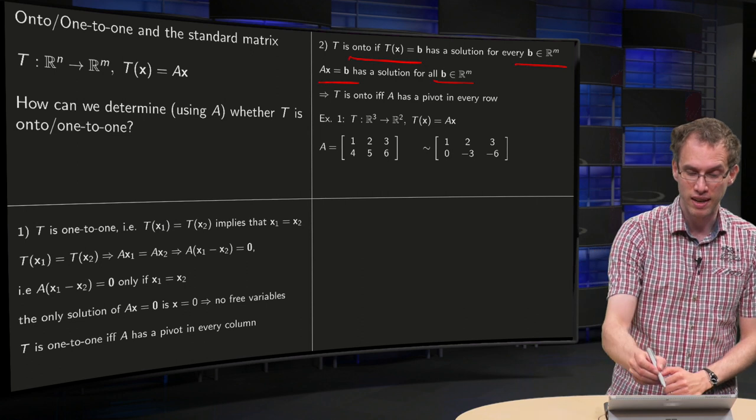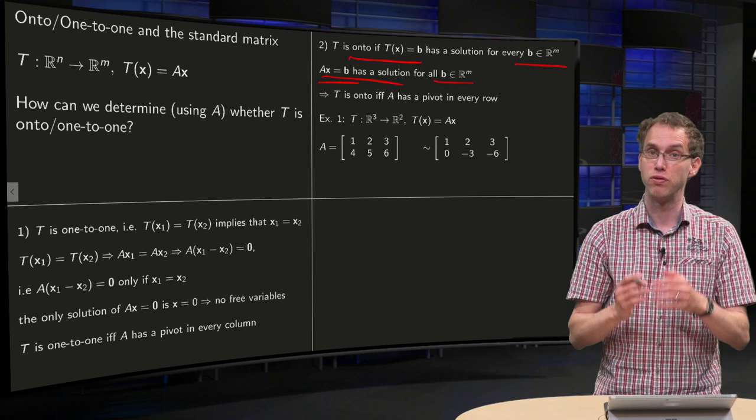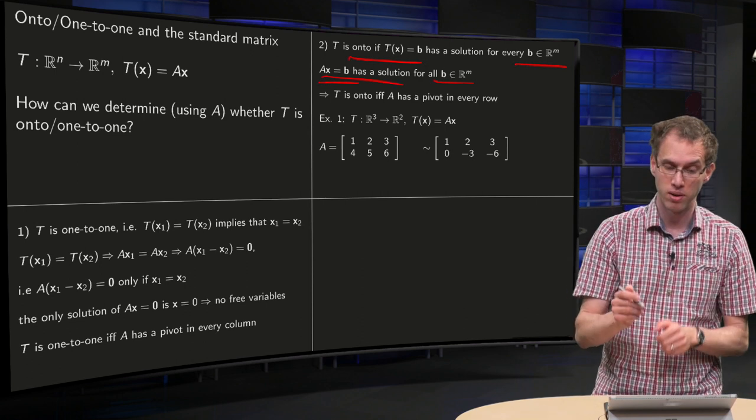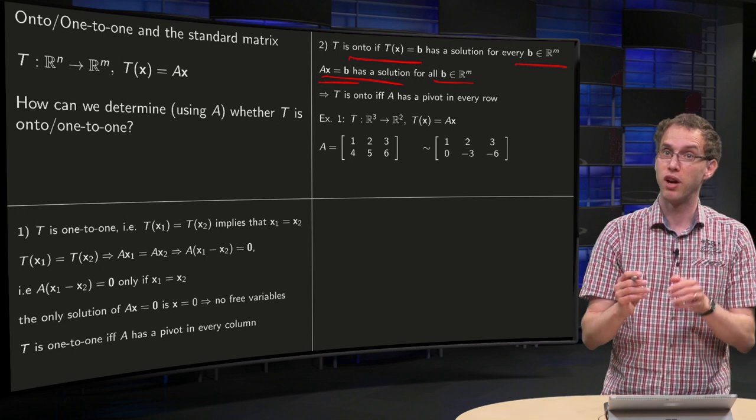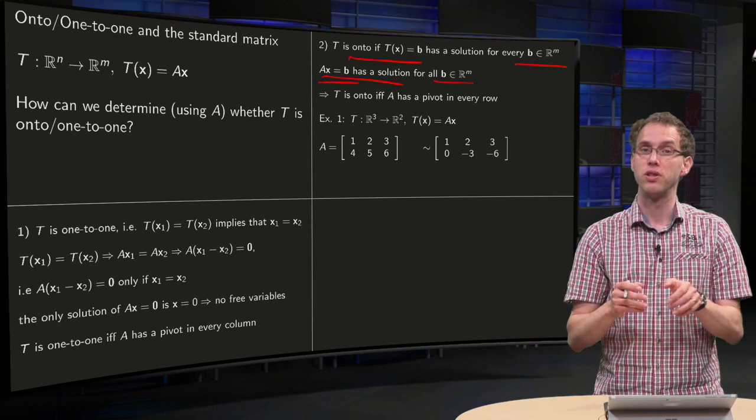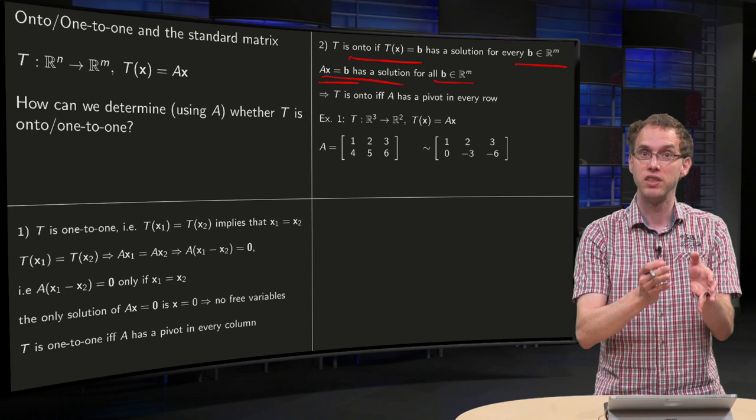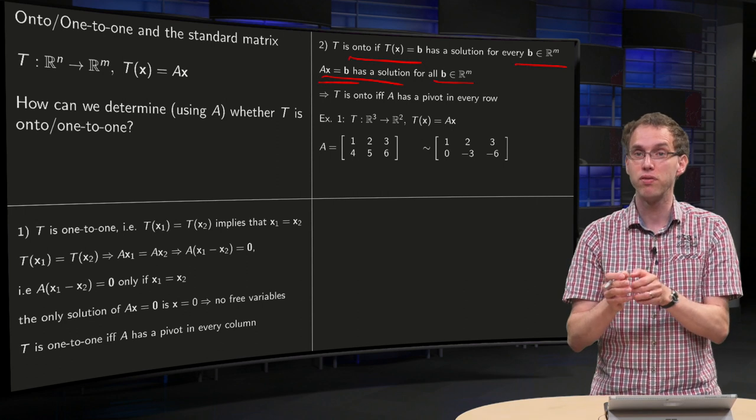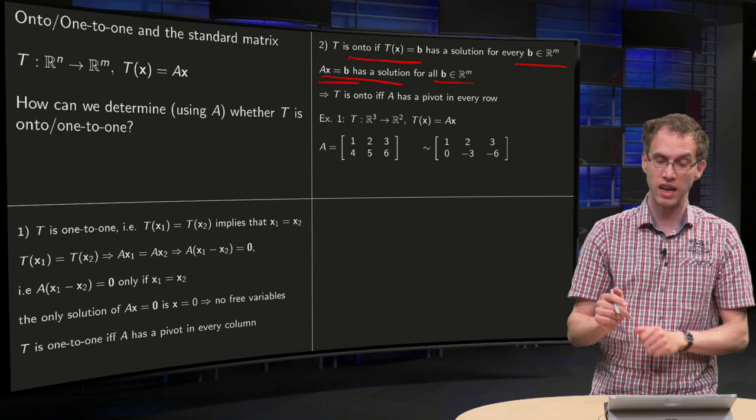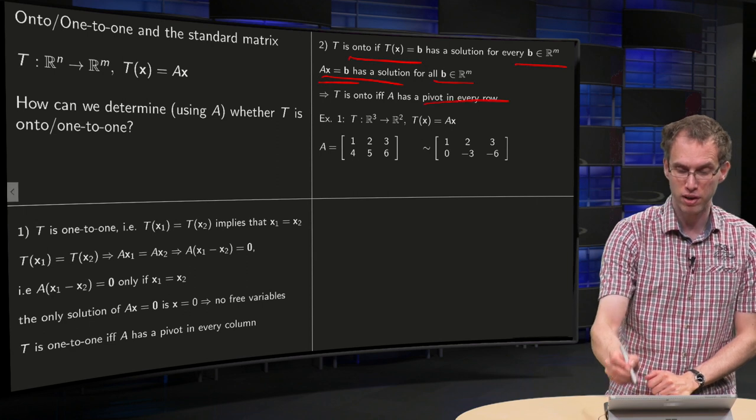So this condition that AX equals B has a solution for all B in R^m, that means that your matrix needs to have a pivot in every row. So summarizing, the transformation T is onto if and only if the corresponding standard matrix A has a pivot in every row.